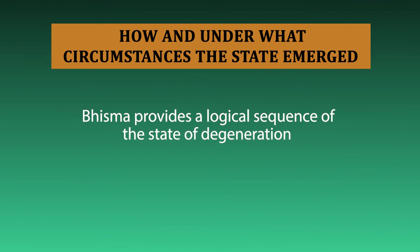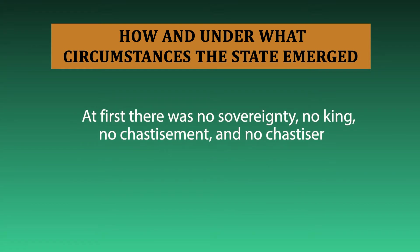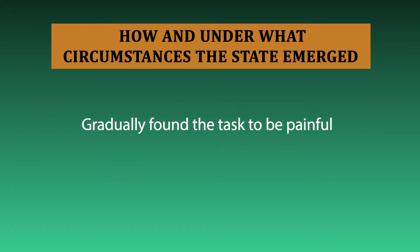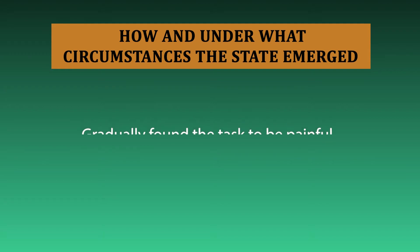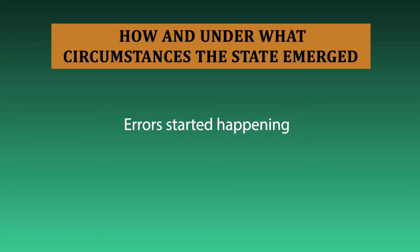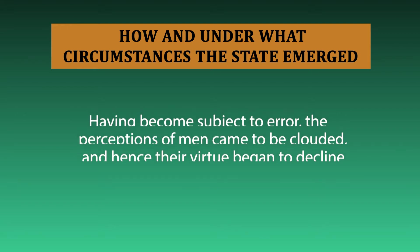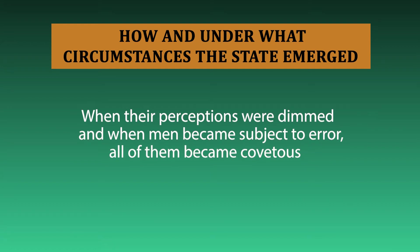Bhishma provides a logical sequence of the state of degeneration, elaborating how one fall led to the other. He says: at first there was no sovereignty, no king, no chastisement and no chastiser — all men would protect each other righteously. Gradually, people found the task of protection very painful. They started making errors, and as they made errors, the perception of the people became cloudy and dimmed. Gradually virtues began to decline. When perceptions became dimmed, men were subjected to terror and all became covetous.